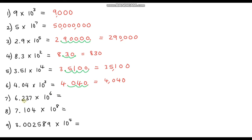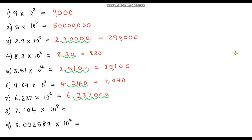Question seven: 6.237 times 10 to the power of 6. So we have 6.237, and let's add some zeros — we'll need quite a few since we're moving it six times. Starting here and moving one, two, three, four, five, six places to the right, the decimal point is now in this position. Getting rid of the three unused zeros, our final answer is 6,237,000 — six million two hundred and thirty-seven thousand.